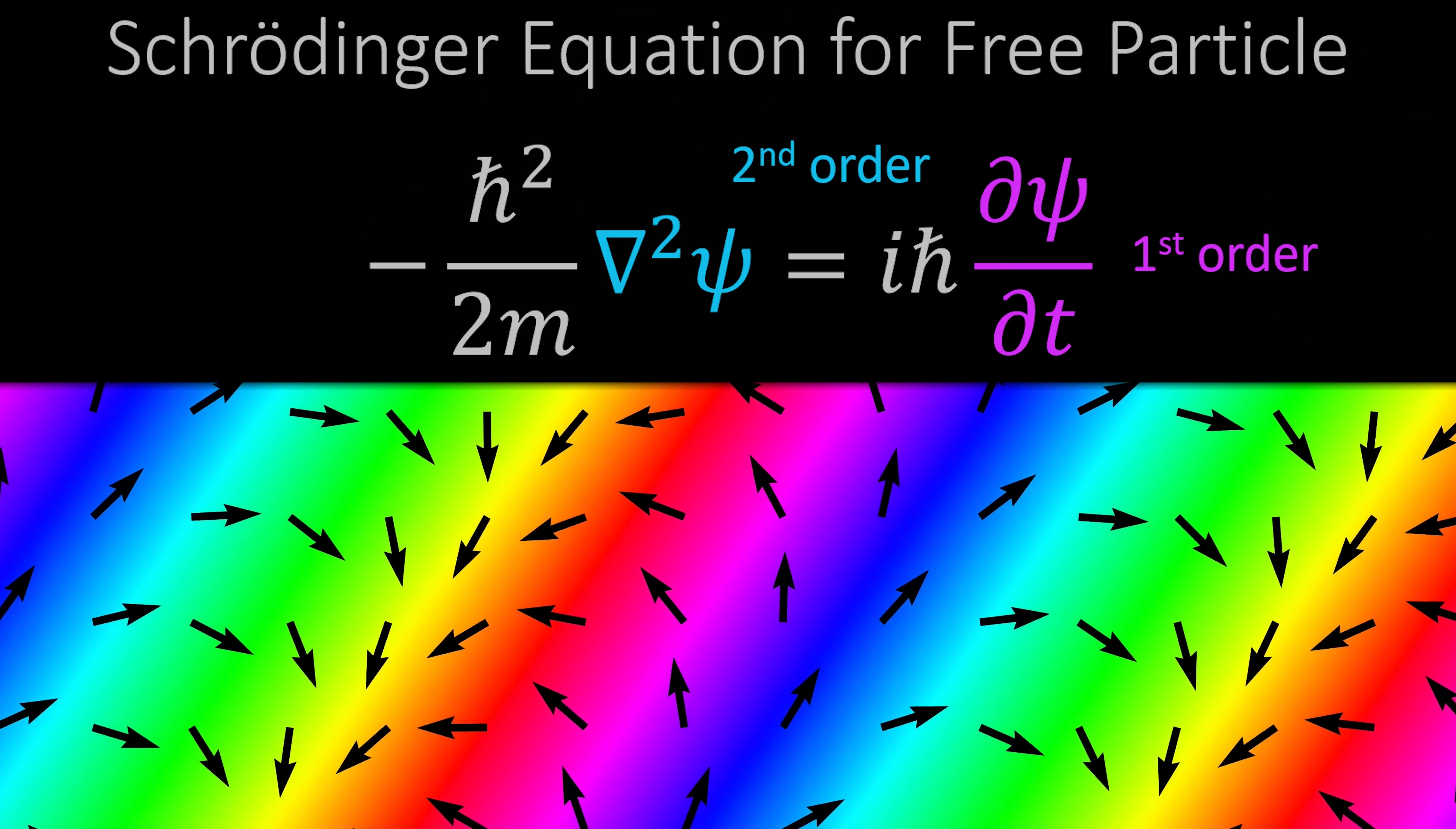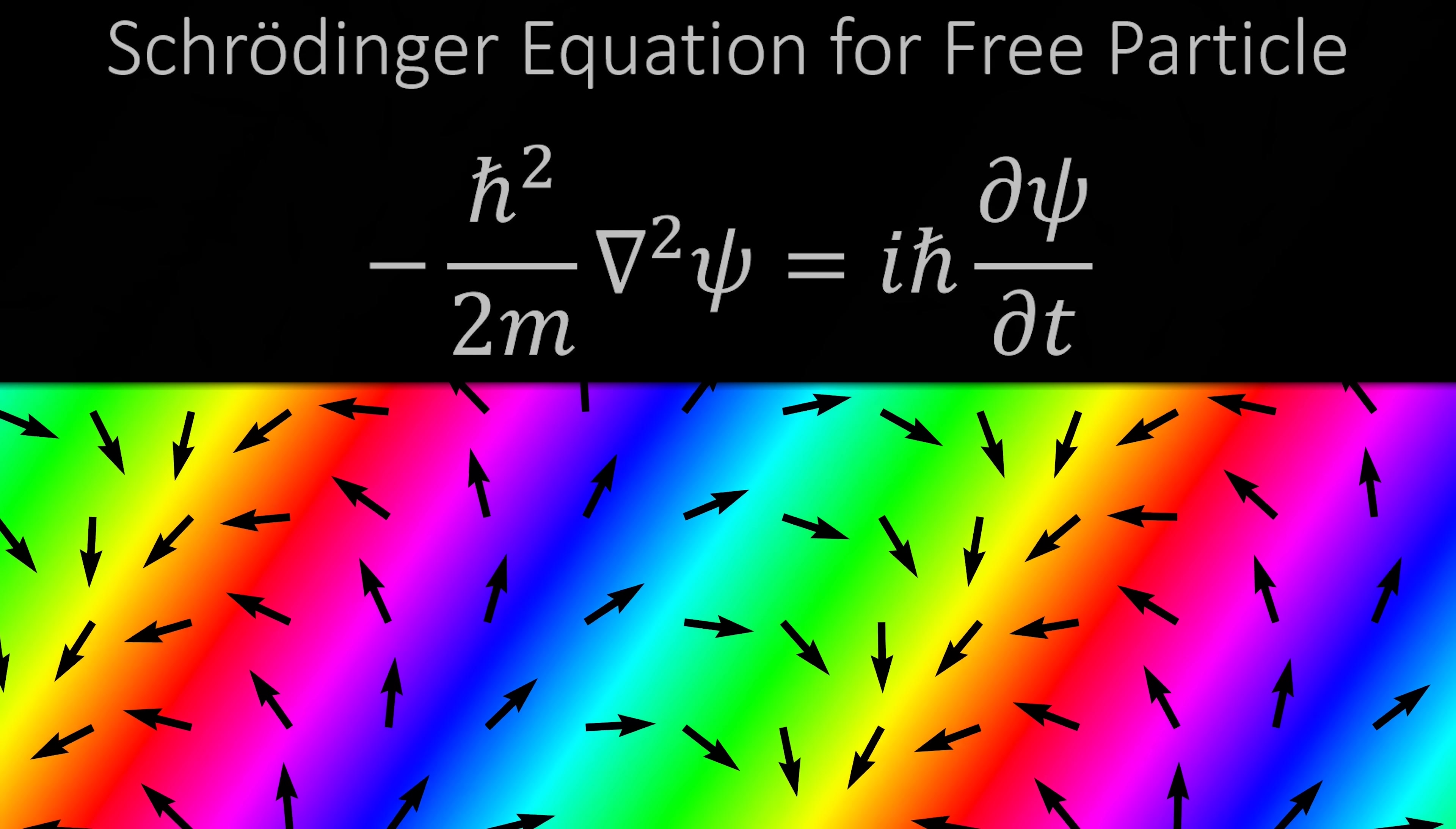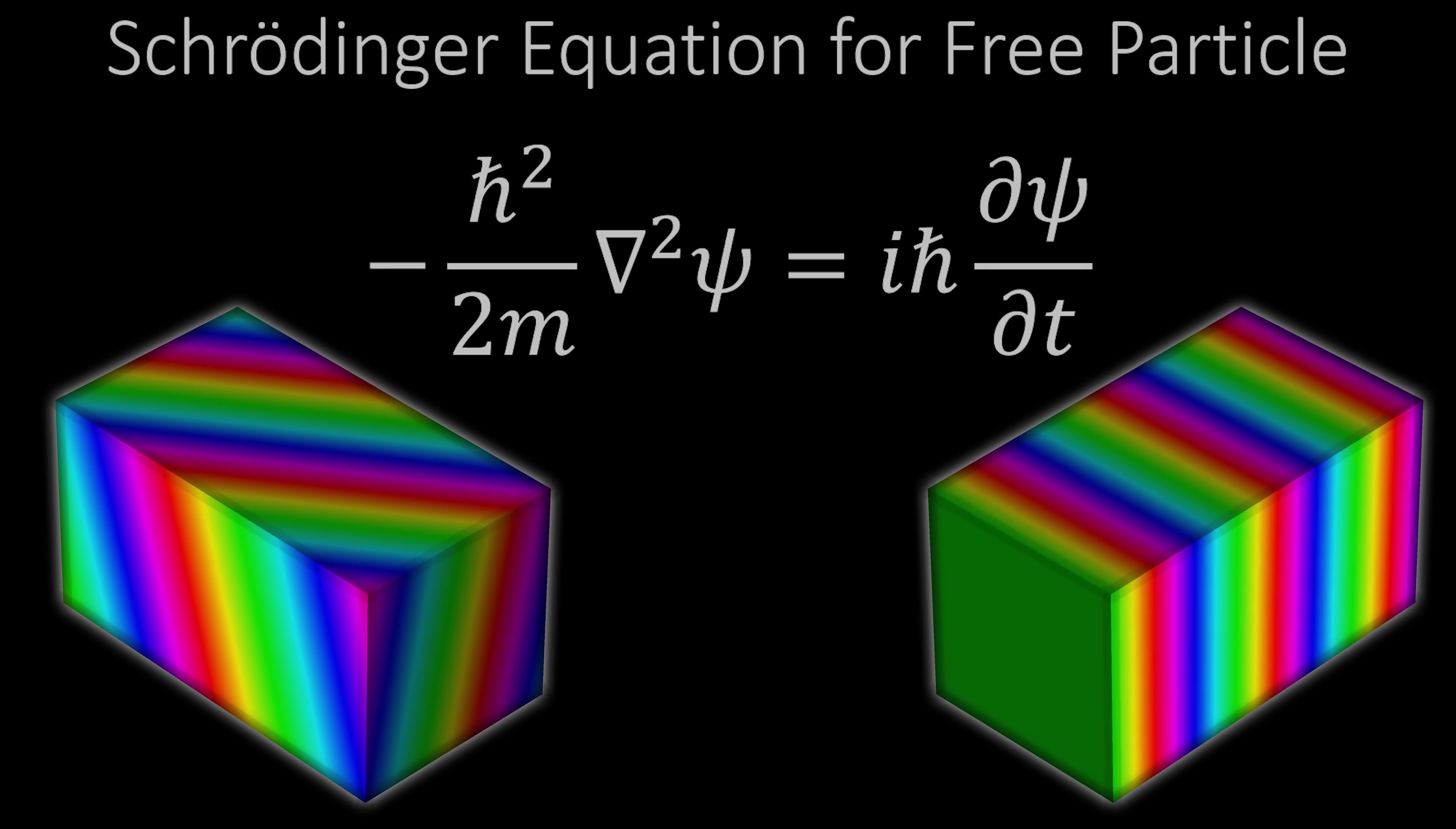In the same equation we have a derivative that's second order in space and first order in time. That doesn't mesh well with the fundamental ideas in special relativity, in which space and time are unified into this three-plus-one dimensional Minkowski space-time. Because of Lorentz boosts, different observers might take different slices through that space-time.